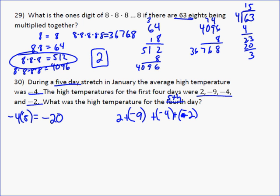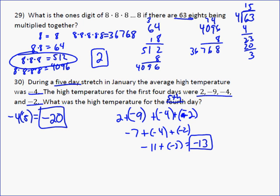Add these together, 2 plus negative 9 is a negative 7. Negative 7 plus negative 4 is a negative 11. Negative 11 plus negative 2 equals negative 13. So the first 4 days, the sum was negative 13. For all 5, we know the sum was negative 20. So that fifth day, we needed a negative 7. Because negative 13 plus negative 7 gives me a total of negative 20. So the answer to that question is negative 7.